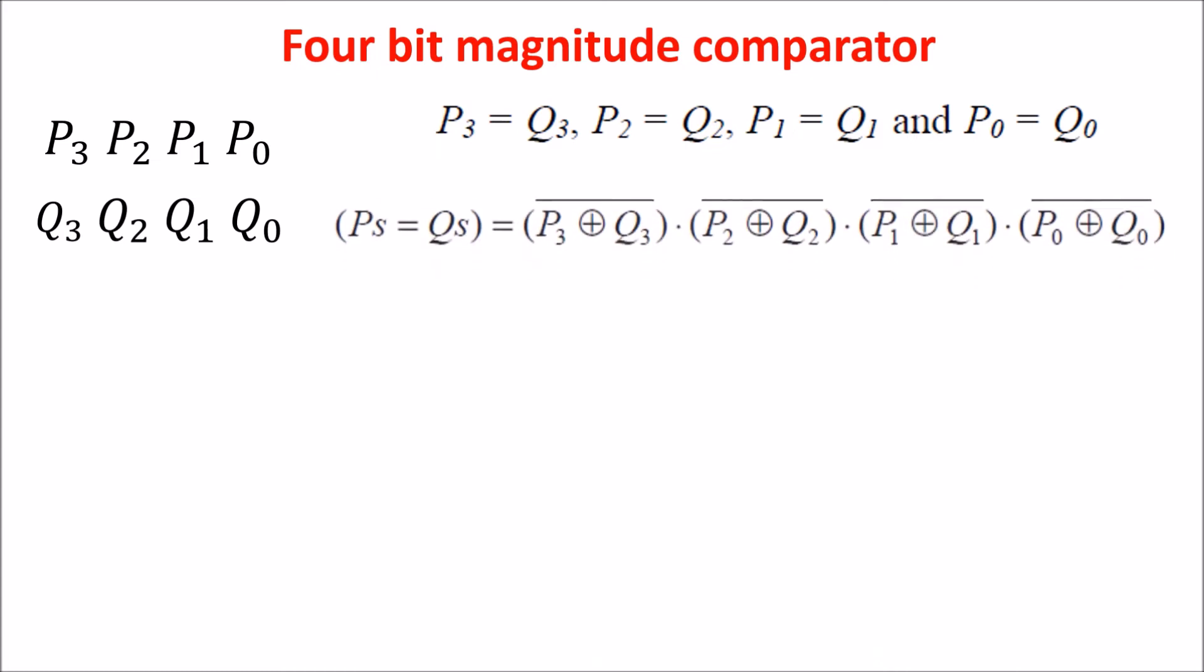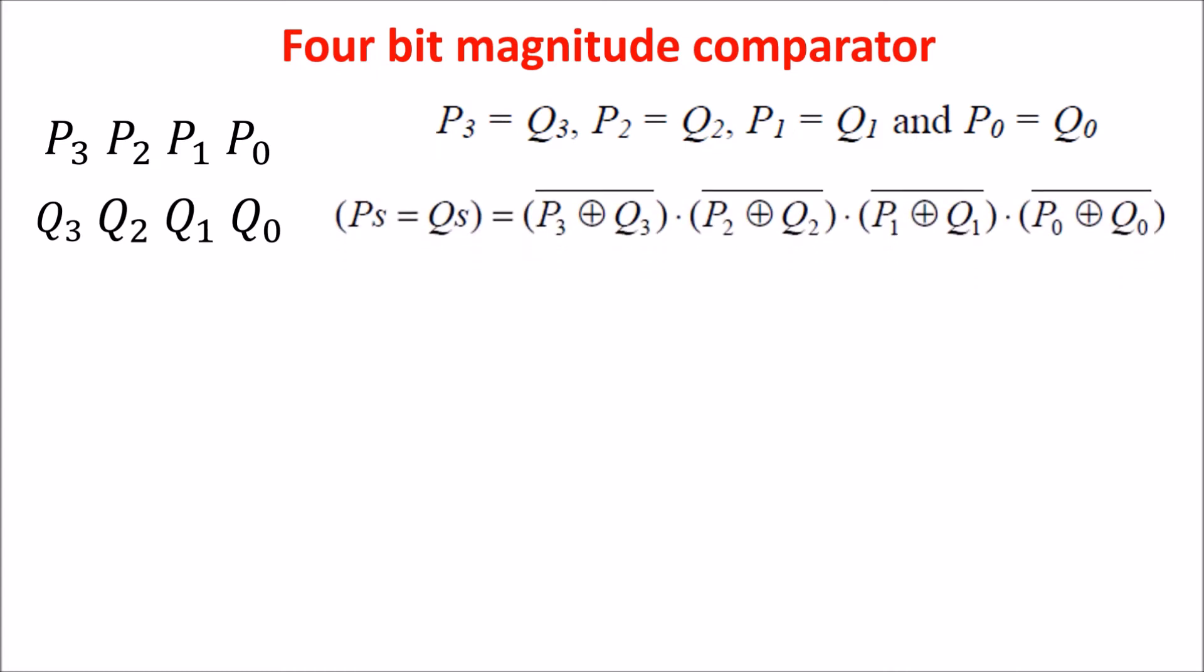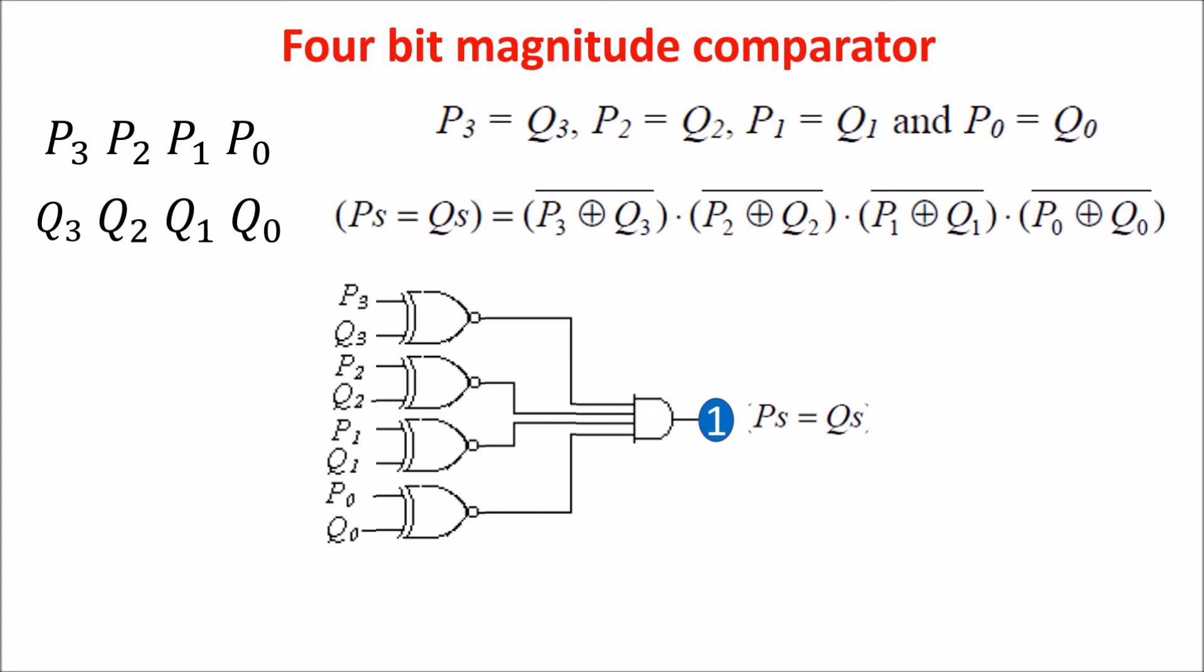We can write this requirement in this way. So we put in bitwise XNOR the two numbers and we do the product of the result through an AND gate. In this way, if all XNOR outputs are at one at the same time, then the final output is at one and the two numbers are equal.